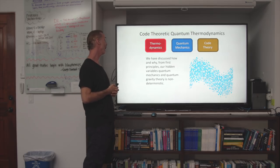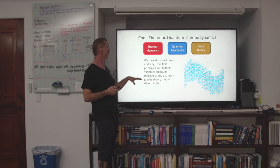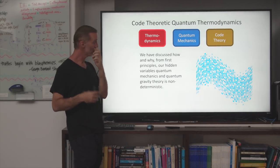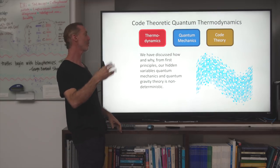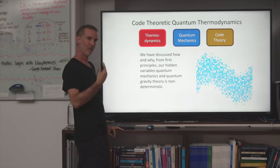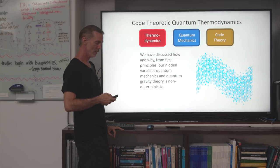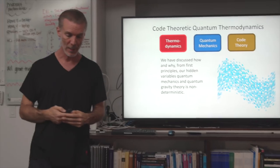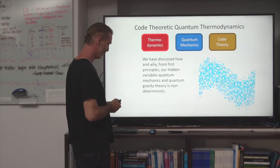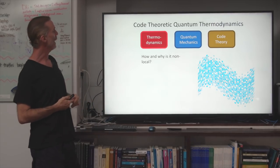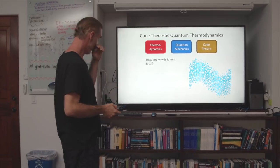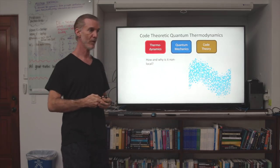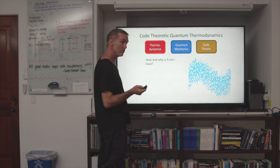We have discussed how and why, from first principles, our hidden variables quantum mechanics and quantum gravity toy model is non-deterministic. It is slowly emerging to become a more sophisticated toy model and we're starting to do our 2D game of life — it will become a theory someday. From first principles, I'm arguing why it is, in principle, non-deterministic. So how and why is it non-local? In order to not violate Bell's theorem, it must be non-deterministic and non-local. We've argued why it is non-deterministic from first principles.